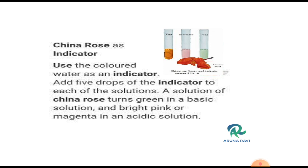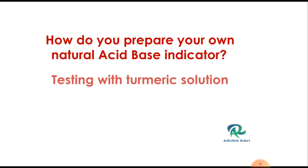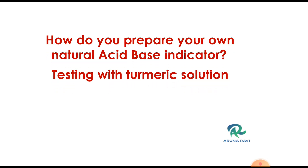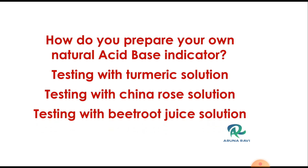We can identify whether the given substance is an acid or base. Let's talk about turmeric solution, china rose, acid-base indicators, and beetroot as natural indicators.